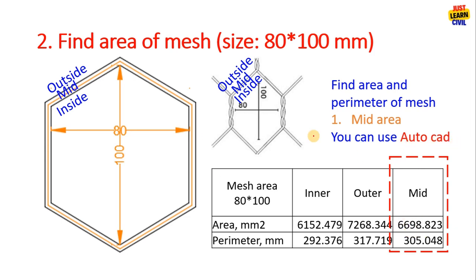You can use AutoCAD or other software or formula to calculate the area of any shape. Here hexagonal mesh but you can use any shape. Simply find the area and perimeter of the mid section.